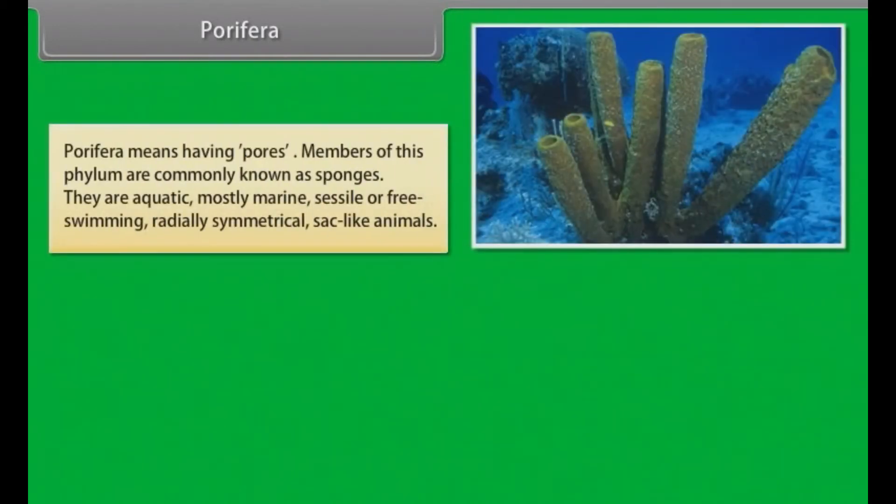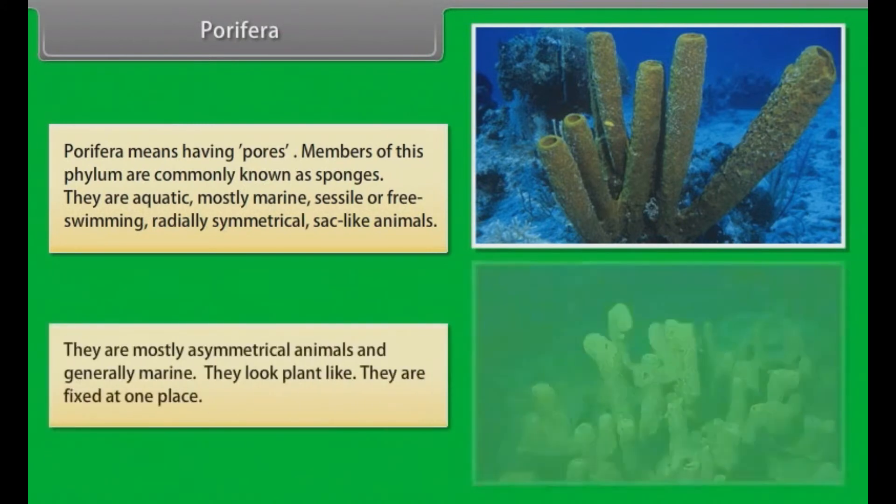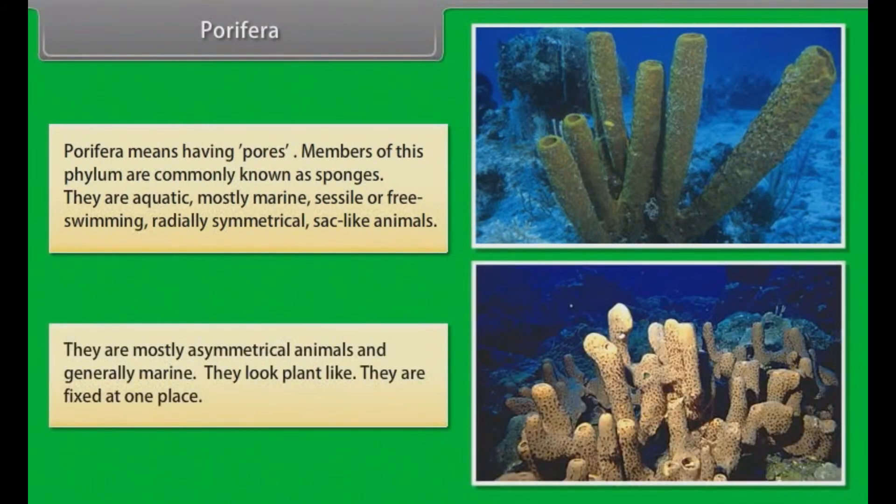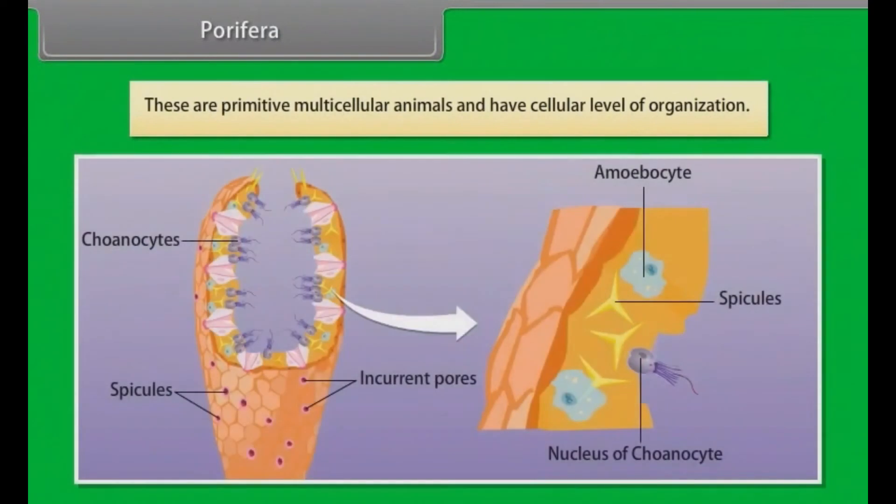Porifera. Porifera means having pores. Members of this phylum are commonly known as sponges. They are aquatic, mostly marine, sessile or free swimming, radially symmetrical, sack-like animals. They are mostly asymmetrical animals and generally marine. They look plant-like. They are fixed at one place. These are primitive, multicellular animals and have cellular level of organization.